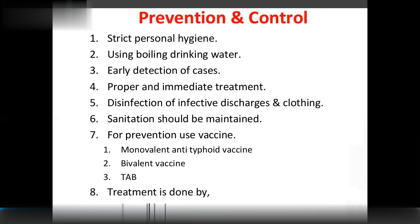Prevention and control of typhoid is similar to cholera: strict personal hygiene, boiling water, early detection of cases, proper and immediate treatment, disinfection of infective discharges and clothing, and maintaining sanitation. Vaccination options include monovalent antityphoid vaccine, bivalent vaccine, and treatment is done by antibiotics.